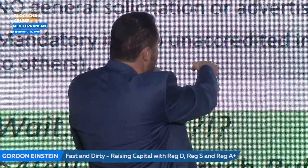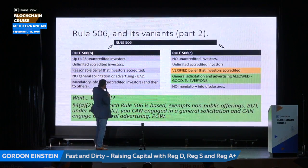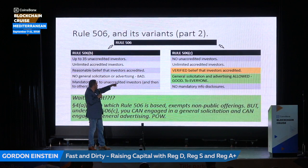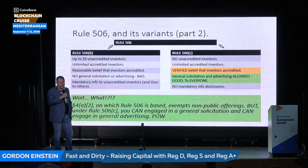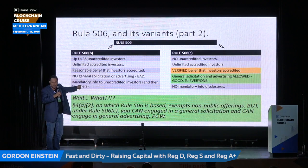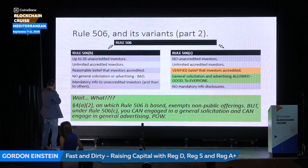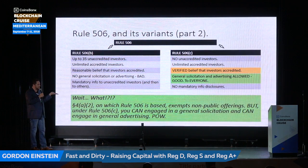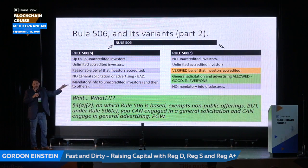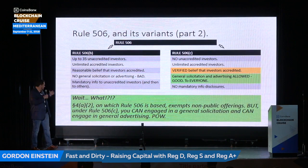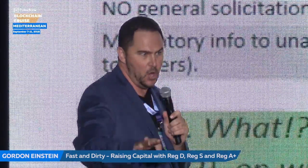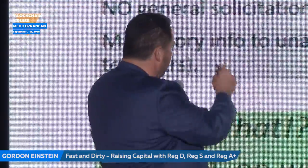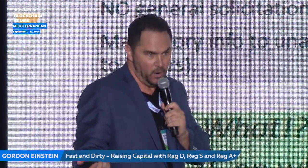The JOBS Act put in 506C — and I love 506C. Get rid of the unaccredited investors; they don't have the money anyway. Take advantage of the unlimited accredited investors. Under 506C, you need to verify that they are accredited — you need to dig into their background. But if you do this, you can do general solicitation and advertising to everyone. You can advertise your stock sale, your SAFT sale, put up websites. You don't need to limit access like you do with 506B. You can advertise to the world and sell your tokens and stock so long as you're only actually selling to accredited investors that you've verified.